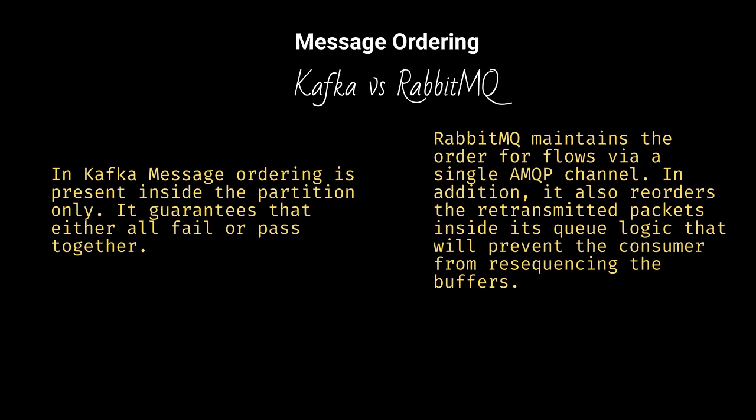In Kafka, message ordering is present inside the partition only, and it guarantees that either all fail or pass together. RabbitMQ maintains the order for flows via a single AMQP channel. In addition, it also reorders the retransmitted packets inside its queue logic, which prevents the consumer from resequencing the buffers.